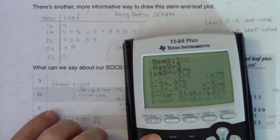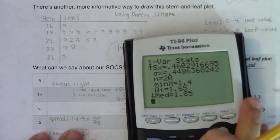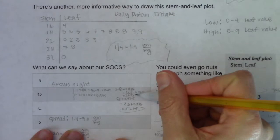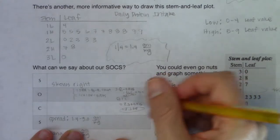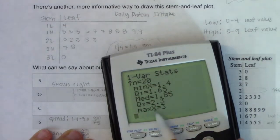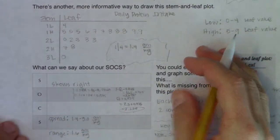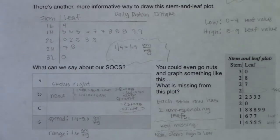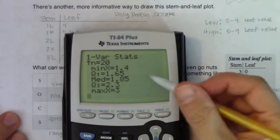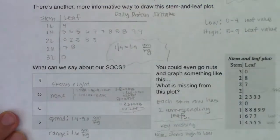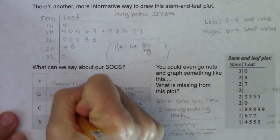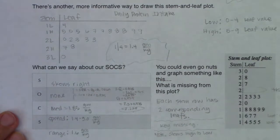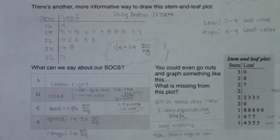I'll run one-variable stats to check the min and max. The min is 1.4 — my lower bound was 0.675, so 1.4 is definitely in the safety zone. The max is 3, which is also safely inside that safety zone. So I have no outliers in this data set. In terms of center, I'm going to use the median: 1.85 grams of protein per kilogram of body weight. Those are my SOCS for example one.